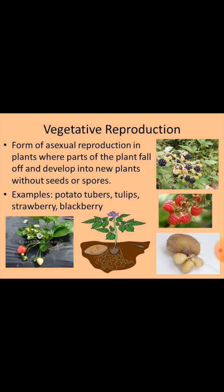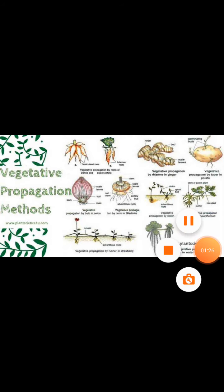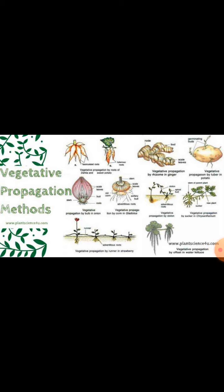Vegetative reproduction is a form of asexual reproduction in plants where a part of the plant develops into a new plant without forming a seed or a spore. Vegetative reproduction involves structures called vegetative propagules or diaspores. Some of the different types of vegetative propagation methods are the natural method.